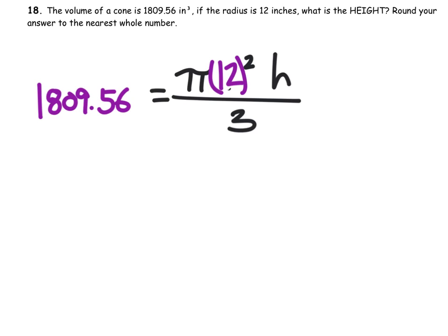So we need to solve for h. We're just kind of manipulating this equation, so we'll need to multiply both sides by 3, effectively turning this cone into a cylinder.